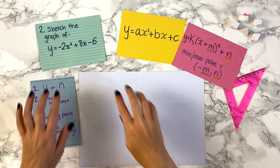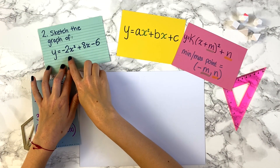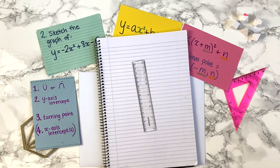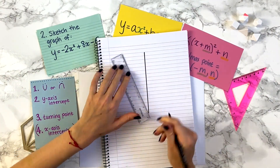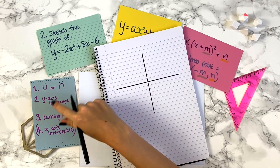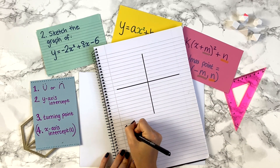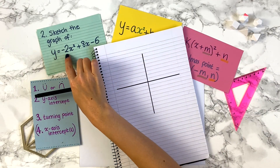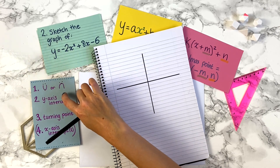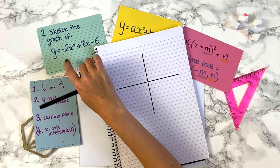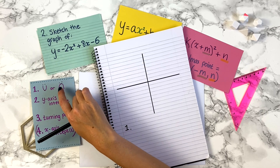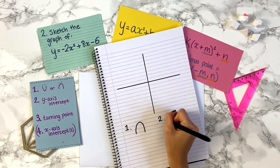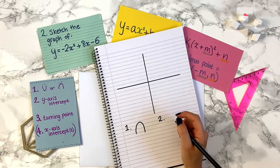Let's try a different graph: sketch y equals minus 2x squared plus 8x minus 6. Let's draw a set of axes again. Step one: is it a happy or sad shape? The number in front of x squared is minus 2, which is negative, so we have a sad, inverted U-shaped graph.